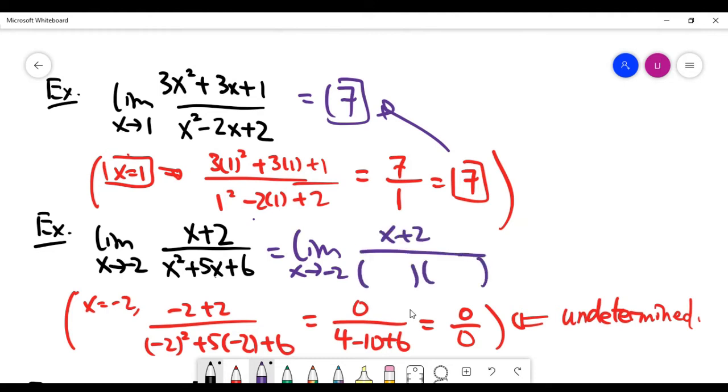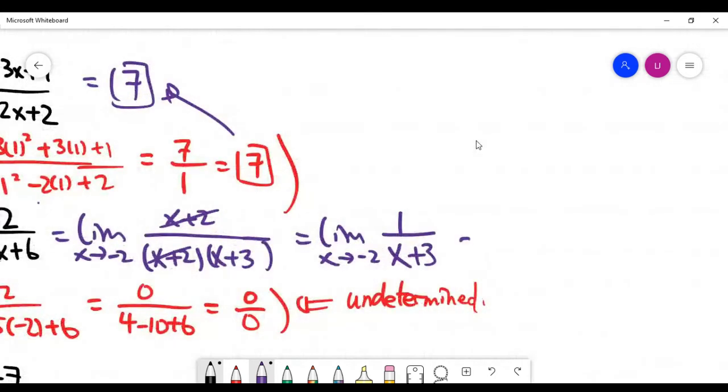Because the bottom, you can do a factorization. You can make the factors x plus 2 times x plus 3. And now you see the factor x plus 2 obviously is cancelled. So we are dealing with the limit for the function 1 over x plus 3. And now it's good. We are not going to get an undetermined item. Because this item is 1 over minus 2 plus 3 when we replace x by minus 2. So the answer is 1 over 1, which is 1.